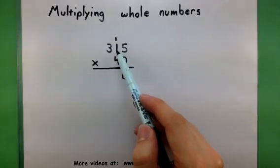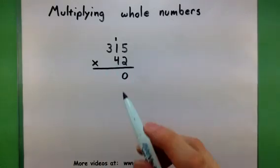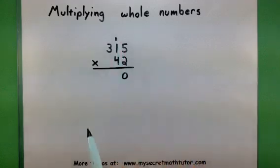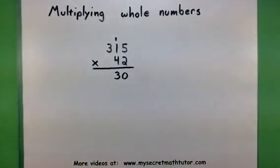Now, I take the 2, multiply it by the 1. So, 2 times 1 is 2. And if there's anything up here, I'm going to add it. So, 2 times 1 is 2, plus 1. That will give me a 3 for this place.